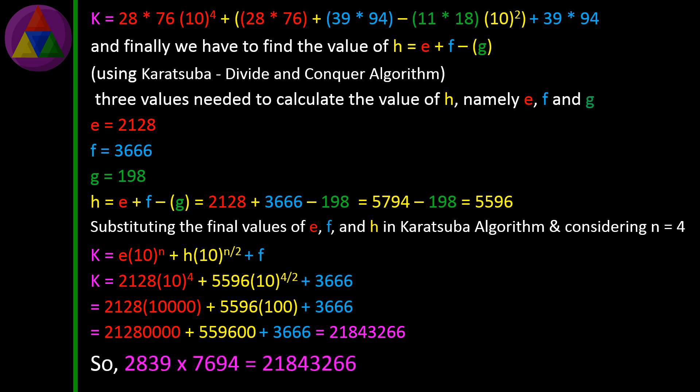So the product of 2839 and 7694 is equal to 21,843,266.